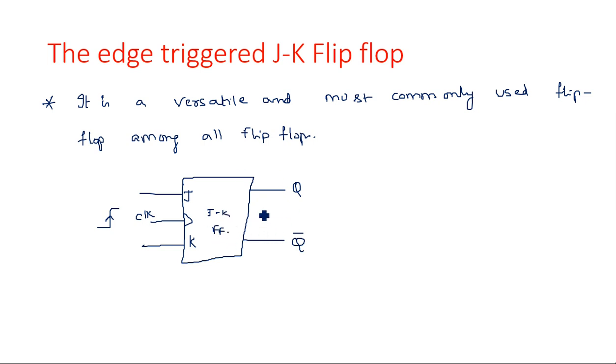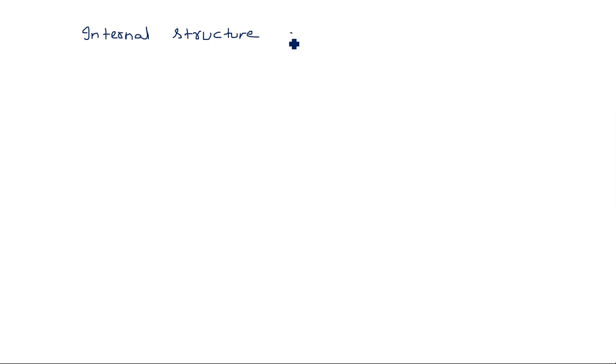So this is the JK flip-flop block representation. The internal architecture is just a modified version of the SR flip-flop, by taking a feedback additionally from the output back to the input NAND gates. This is the internal structure of the JK flip-flop.